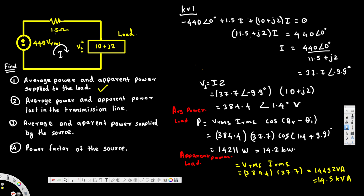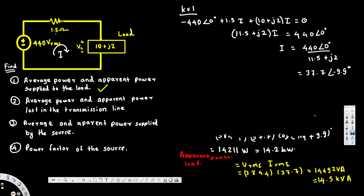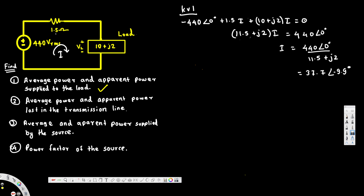The second part asks for average power and apparent power lost in the transmission line. We already know the current. The voltage across the transmission line is V = IZ = 37.7∠-9.9° times 1.5 ohms, which gives 56.6∠-9.9°.